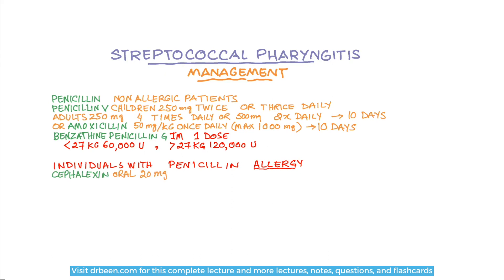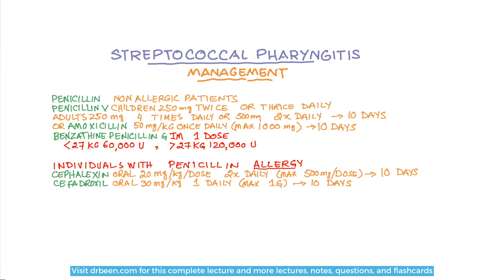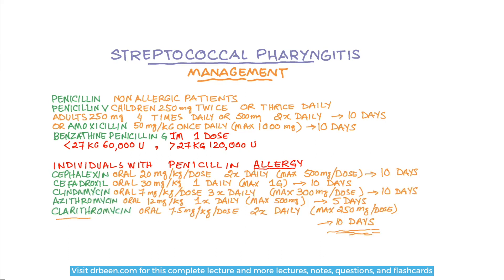For individuals with penicillin allergy, you can give cephalexin oral 20mg per kg per dose twice daily, maximum 500mg per dose for 10 days; or cephalexin oral 30mg per kg once daily, maximum 1g for 10 days. Or clindamycin oral 7mg per kg per dose three times daily, maximum 300mg per dose for 10 days. Azithromycin can be given orally 12mg per kg once daily, maximum 500mg for 5 days. Clarithromycin orally 7.5mg per kg per dose twice daily, maximum 250mg per dose for 10 days.